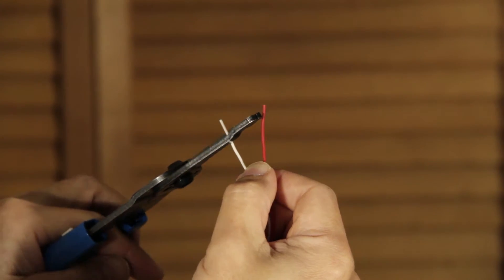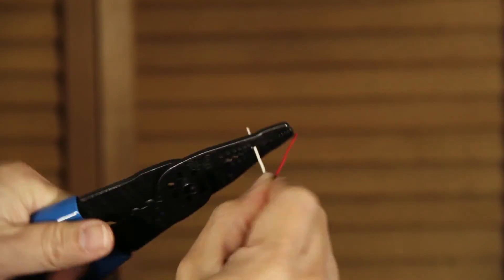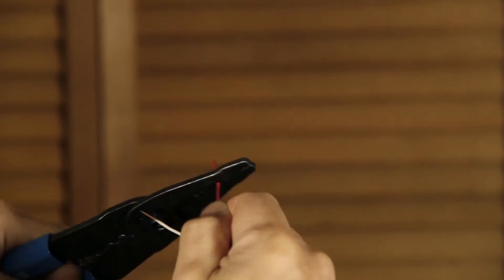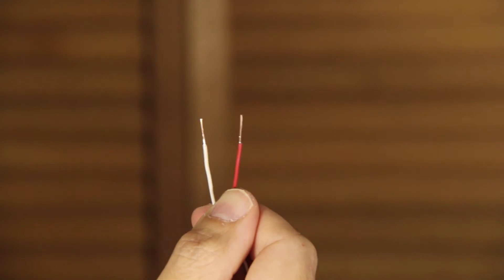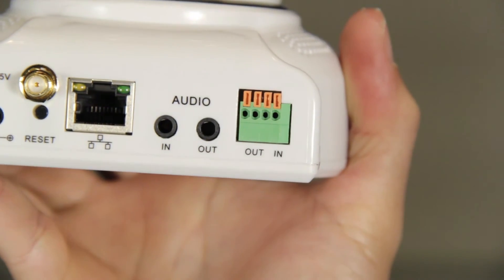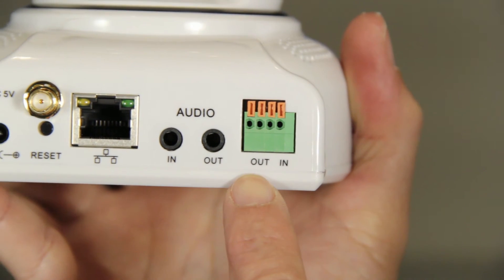Now strip the ends of both the red and the white wire, exposing the wire underneath. You will be fitting these two wires in the out port.